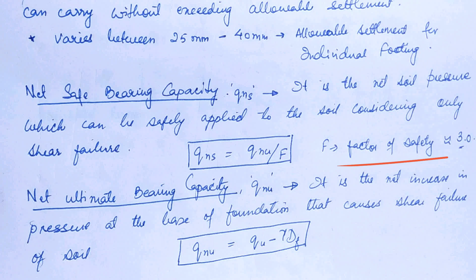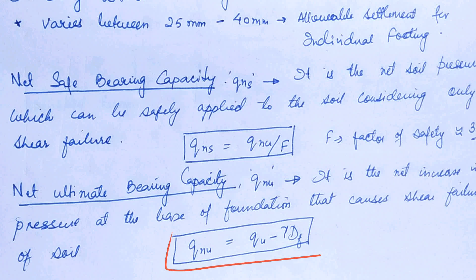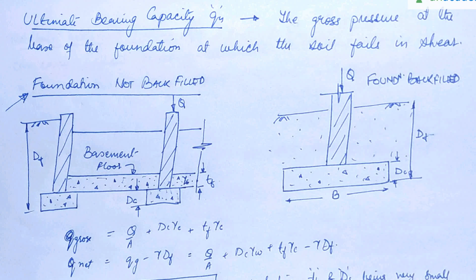Q_NS equals Q_NU divided by F, where F is the factor of safety normally taken as 3.0, and Q_NU is the net ultimate bearing capacity. Net ultimate bearing capacity is the net increase in pressure at the base of the foundation that causes shear failure of the soil. Q_NU equals ultimate bearing capacity minus γ·DF. Ultimate bearing capacity is the gross pressure at the base of the foundation at which the soil fails in shear.